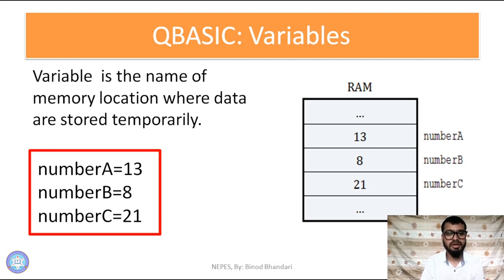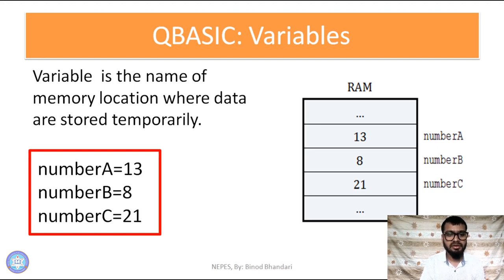Here you can see: number A is equal to 13, number B is equal to 8, number C is equal to 21. Number A, number B and number C are variables. These variables are always on the left-hand side, and on the right-hand side are the constants. 13, 8 and 21 are the data — you can say these are the constants.